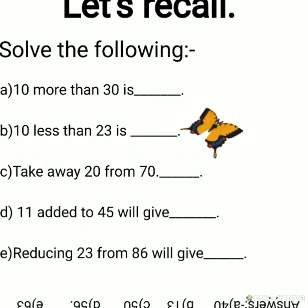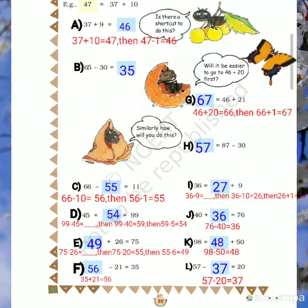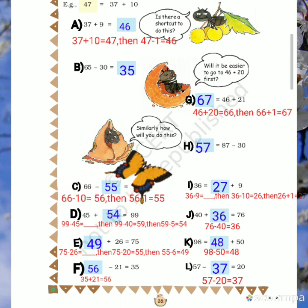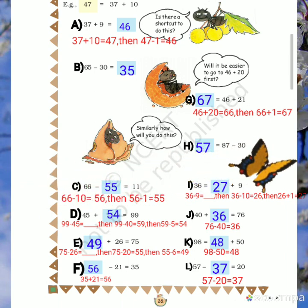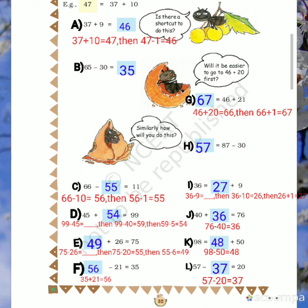E: Reducing 23 from 86 will give — reducing means subtract. So 86 minus 23, what will you get? First subtract 20, then subtract 3 more. Now, coming to your book, you have to solve these sums using the shortcut method mentally. Do the calculation in your mind.